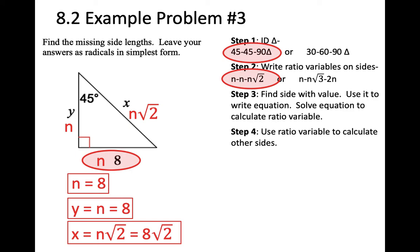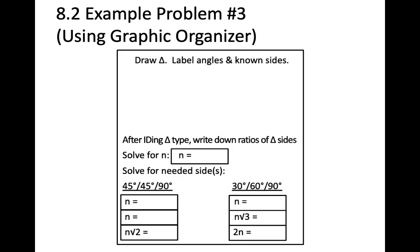I'll do this same problem again to demonstrate the graphic organizer, which is available on Canvas and is just a crutch as you learn. Step 1: draw the triangle. Step 2: put on the sides — N, N, N root 2. Step 3: solve for N — in this case N equals 8. Step 4: find the three sides — N is 8, and N root 2 is 8 root 2. The graphic organizer shows these steps one at a time so we can make sure we're doing them all correctly.